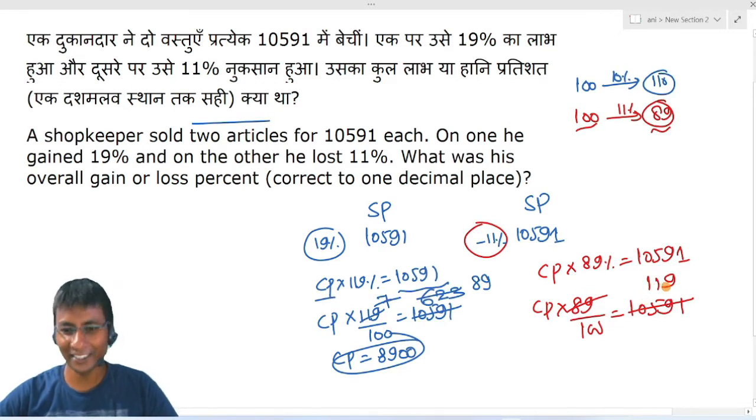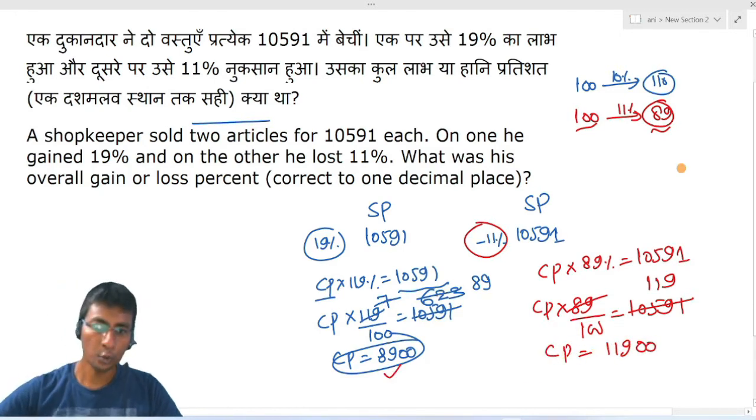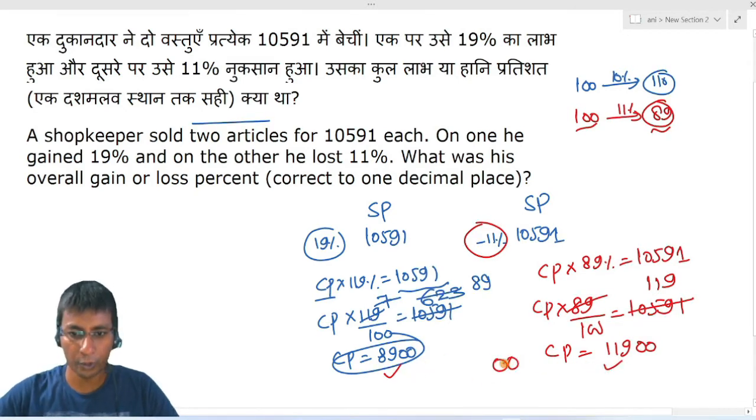You keep dividing and CP equals 11900. So total CP will be the sum of both. Last digit is 20, 9 and 9 is 18, 8 and 1 is 9, 9 and 1 is 0, and this is 2. So you get the total CP of 20800.